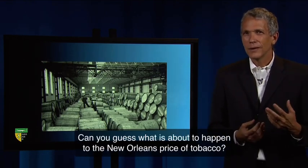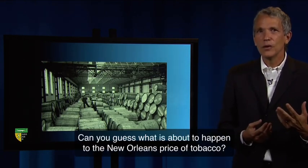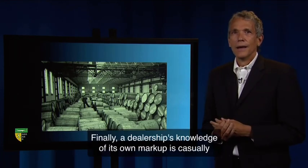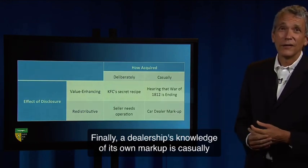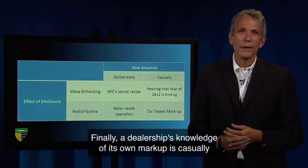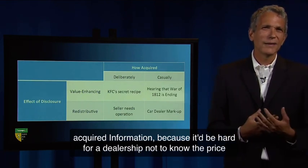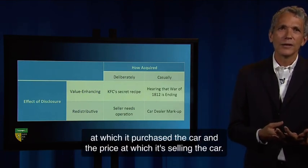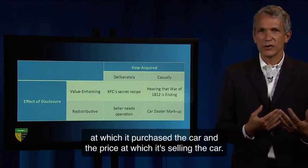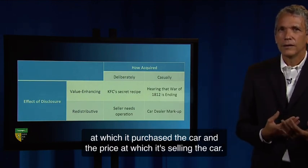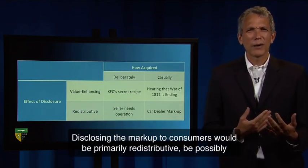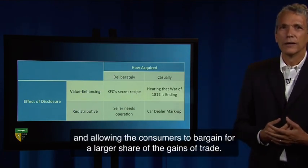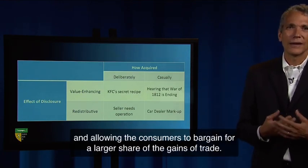Can you guess what is about to happen to the New Orleans price of tobacco? Finally, a dealership's knowledge of its own markup is casually acquired information because it would be hard for a dealership not to know the price at which it purchased the car and the price at which it's selling the car. Disclosing the markup to consumers would be primarily redistributive, possibly allowing the consumers to bargain for a larger share of the gains of trade.